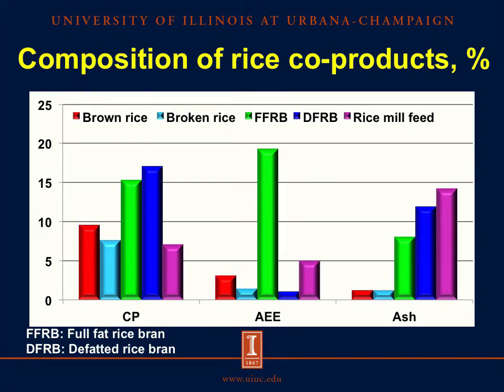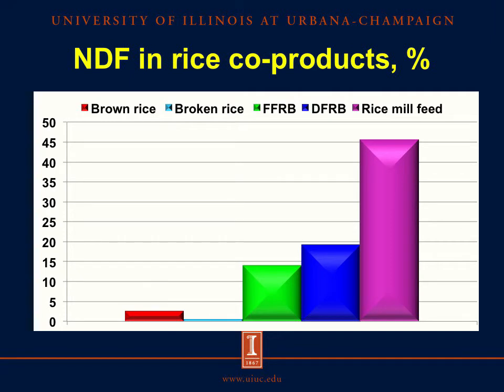Now let's review the composition of these rice coproducts. In this graphic, the red bar represents brown rice, the light blue bar is broken rice, the green bar is full-fat rice bran, dark blue is defatted rice bran, and the purple bar represents rice mill feed. We can see that brown rice and broken rice have less than 10% crude protein, whereas defatted rice bran and full-fat rice bran have approximately 15% and 12% respectively. The concentration of ether extract is about 20% in full-fat rice bran, whereas in other rice coproducts it is less than 5%. The content of ash is higher in rice mill feed due to the high content of silica in rice hulls. The content of neutral detergent fiber is highest in rice mill feed at 45%, but in full-fat rice bran and defatted rice bran it is 14% and 20% respectively.